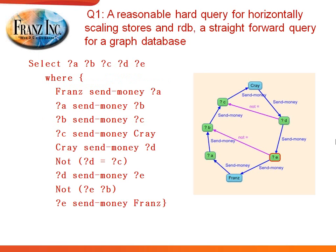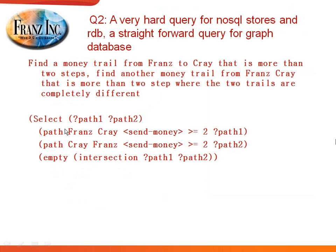Here are some examples. Take a fraud analysis query where you want to know whether Cray and Franz boost their returns by sending each other money through other channels. You could query: did Cray send money to D and E, then find paths to Franz where Franz sent the money back through some other partners, and the paths are not the same. This is a typical graph query, but someone with SQL can probably still formulate it. But if you get to a query where you want to find a path from France to Cray through a 'sent money' predicate more than two steps deep, with a reverse path having an empty intersection — that's nearly impossible in SQL or a typical Hadoop database. This is where graph databases really shine.